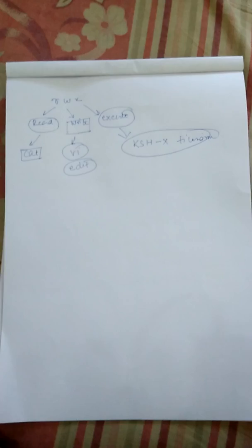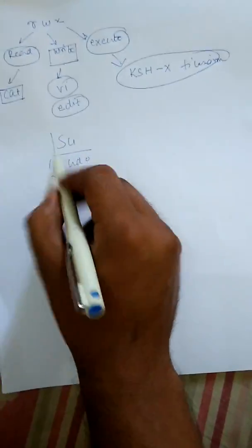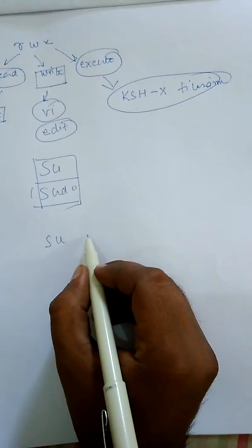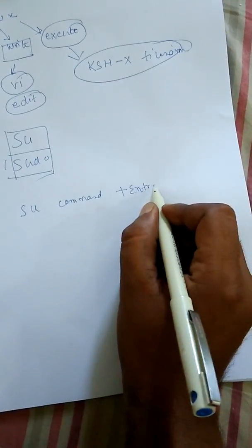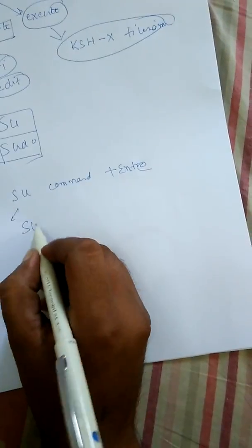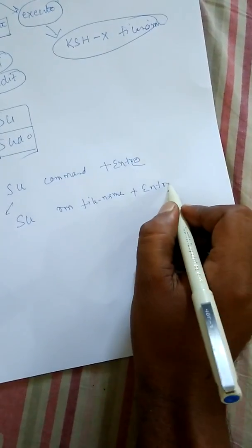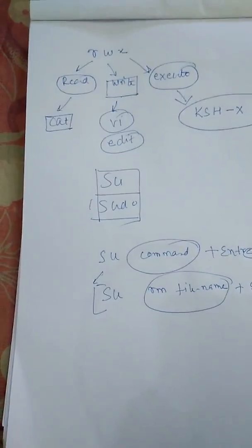Now we will discuss the two commands with the help of which you can become a pseudo user or super user. There are two commands: su and sudo. The general syntax to run the su command is: su followed by the command you want to run, then enter. For example: sudo rm filename, then enter.